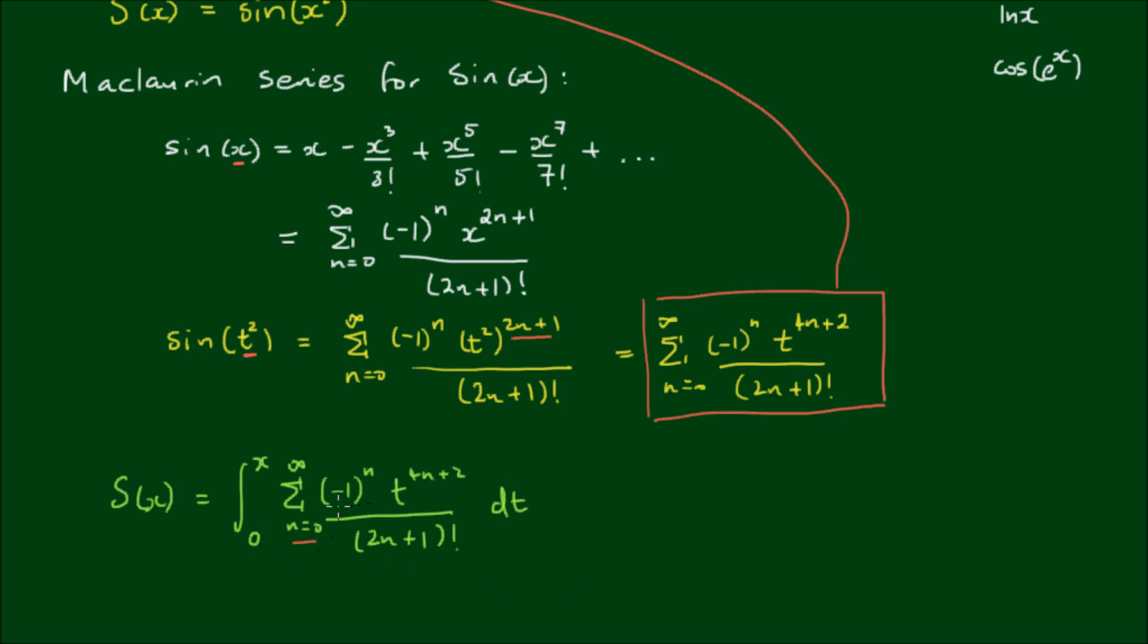Now most of these elements in the integral can actually come out the front. So the sum can come out the front, outside of the integral, as can the constant (-1)^n. And also (2n+1) factorial is also a constant. I should refer them to as coefficients, not constants. And all we're left with is the integral of 0 to x, of t^(4n+2), with respect to t.